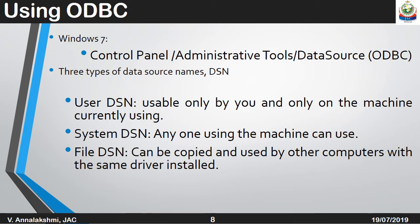To use the ODBC driver in Windows 7, go to the Control Panel and select Administrative Tools, then select Data Source ODBC. There are three types of data source names available: User DSN, System DSN, and File DSN. User DSN is only usable by you and only on the machine currently being used. System DSN can be used by anyone using the machine. File DSN can be copied and used by other computers with the same driver installed.